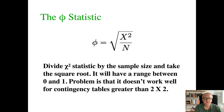The phi statistic is computed by taking your chi-square value, dividing it by N (the total sample size), and taking the square root. The result is a number between zero and one. However, phi doesn't work well if you have a table larger than 2×2. In our example with a 2×3 table, phi wouldn't be appropriate.